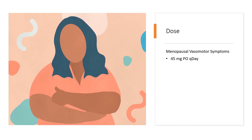Dose. For menopausal vasomotor symptoms, Fezolinetant is indicated for the treatment of moderate to severe vasomotor symptoms (VMS) caused by menopause. The dose is 45 mg orally once daily (POQD).